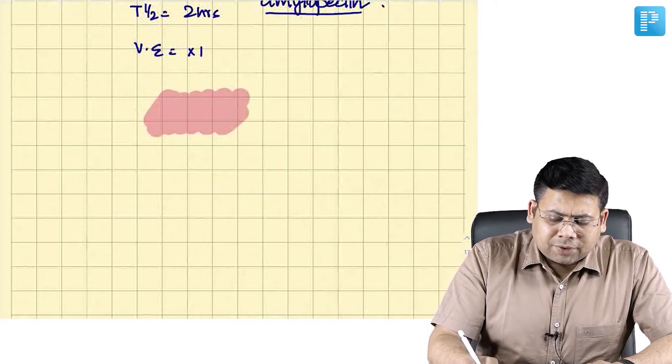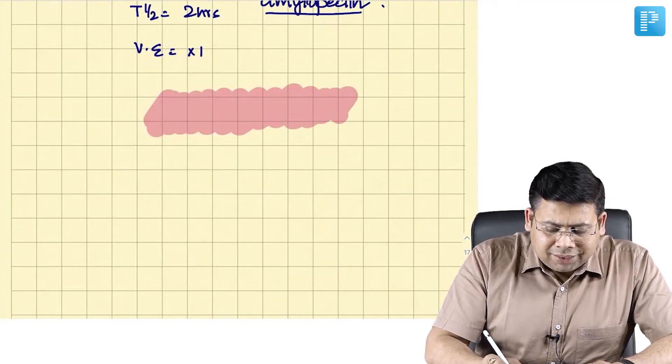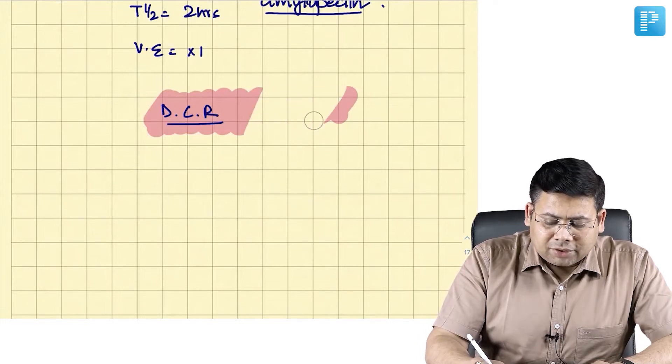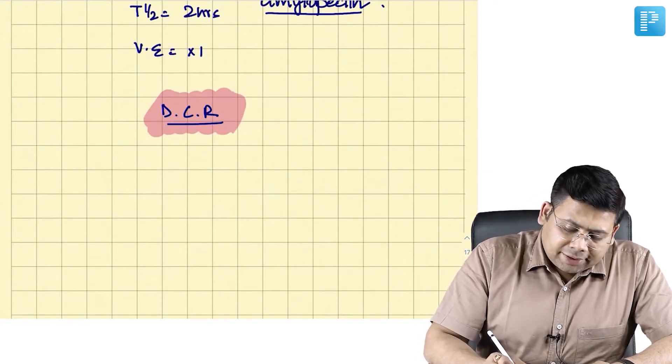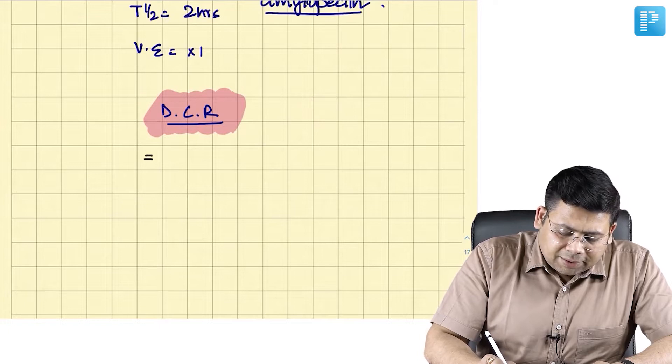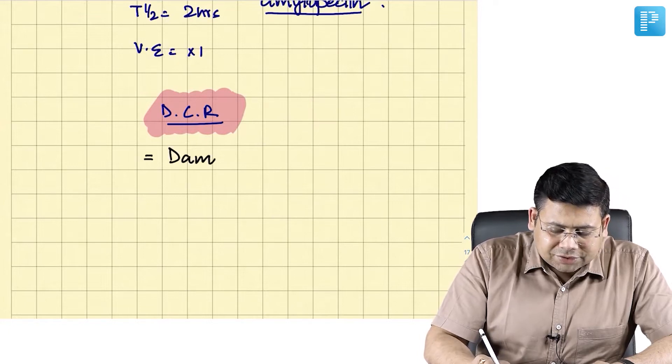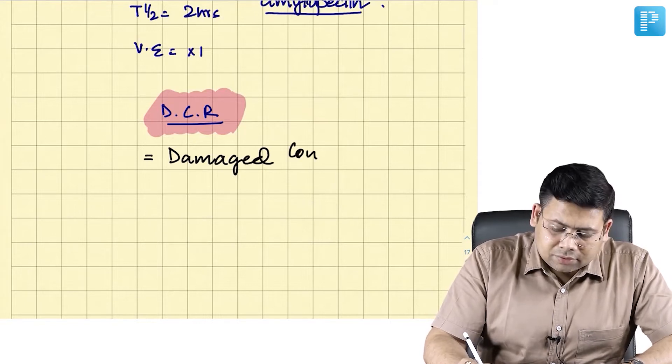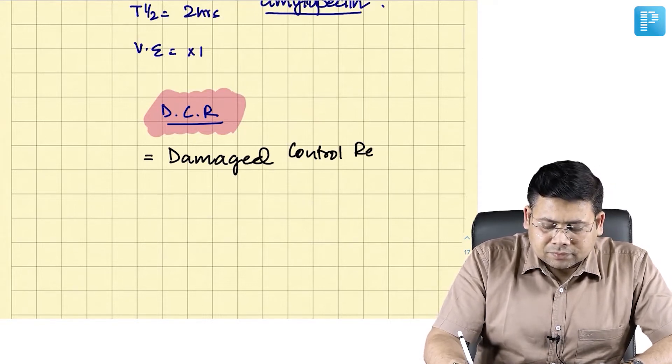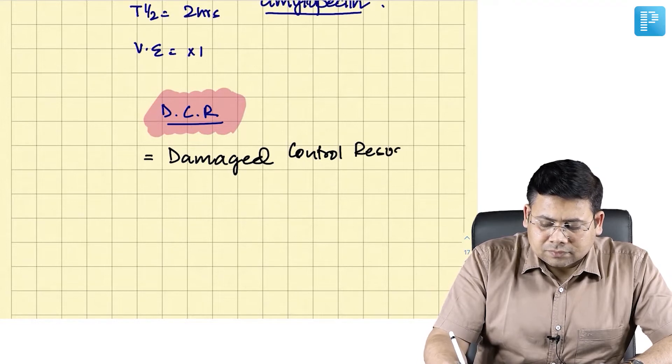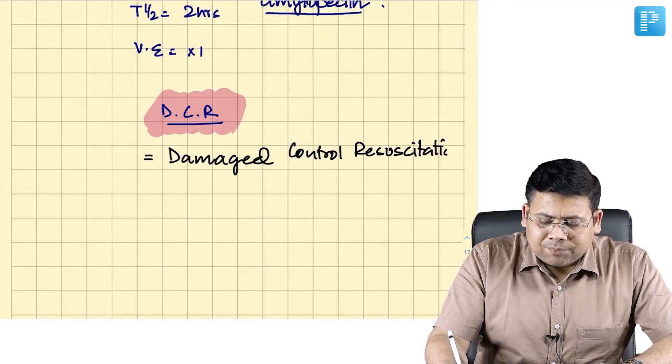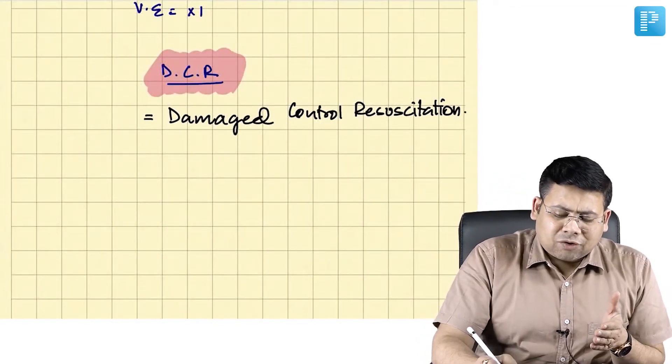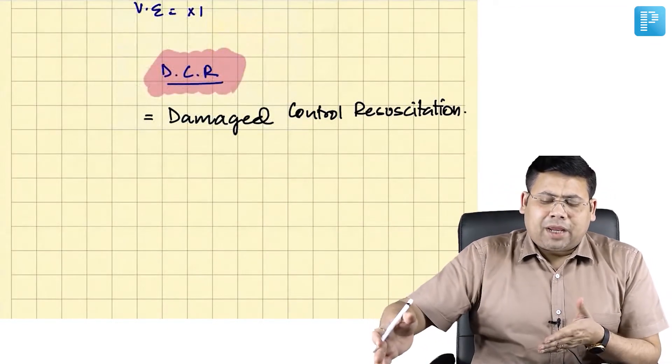So in this chapter, let us quickly continue the concept of DCR. What do you mean by DCR? It is defined as damage controlled resuscitation. Now there are some principles of damage controlled resuscitation. These patients are already in grade 3, grade 4, might be hypovolemic shock. The first and most important point is limited use of crystalloids.